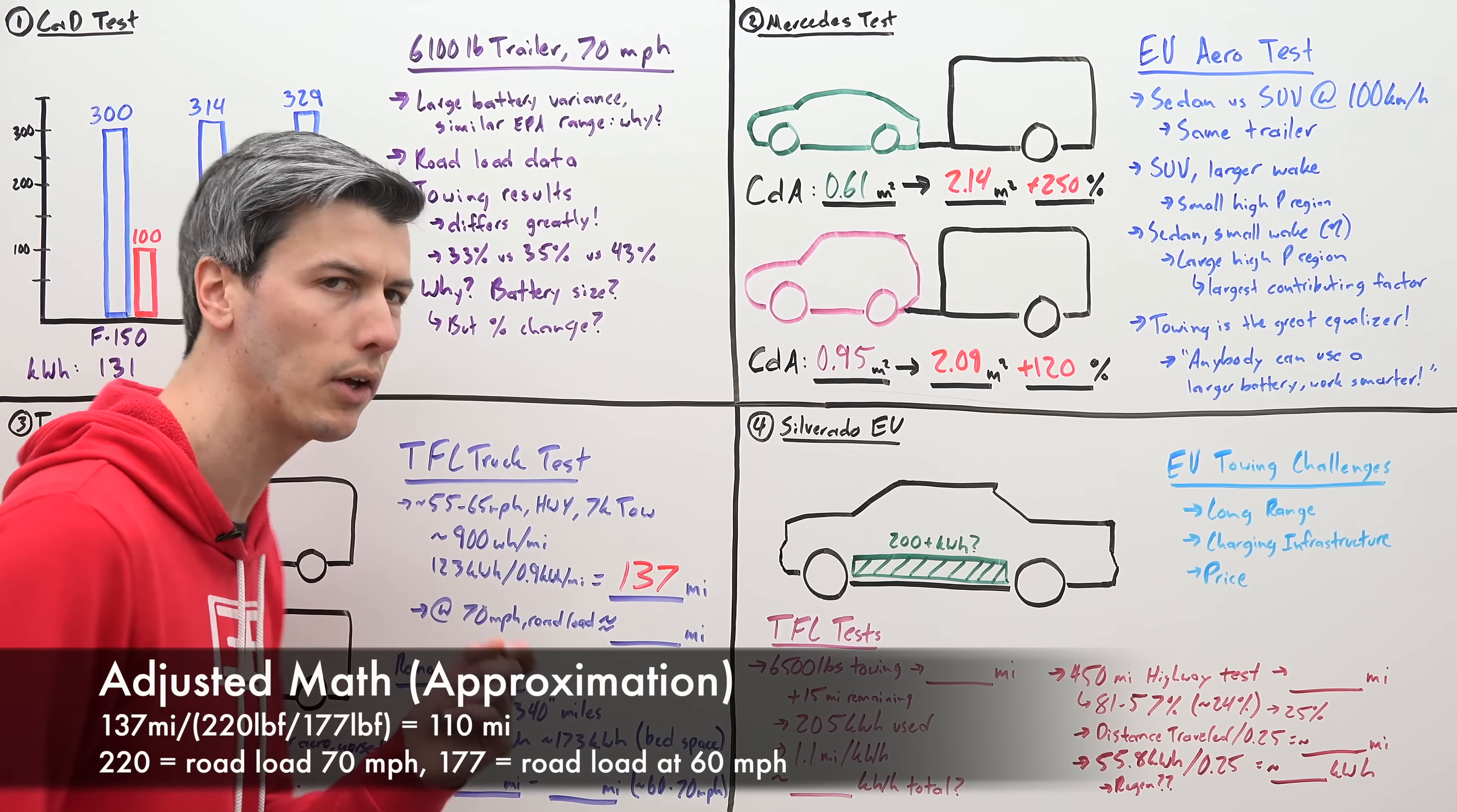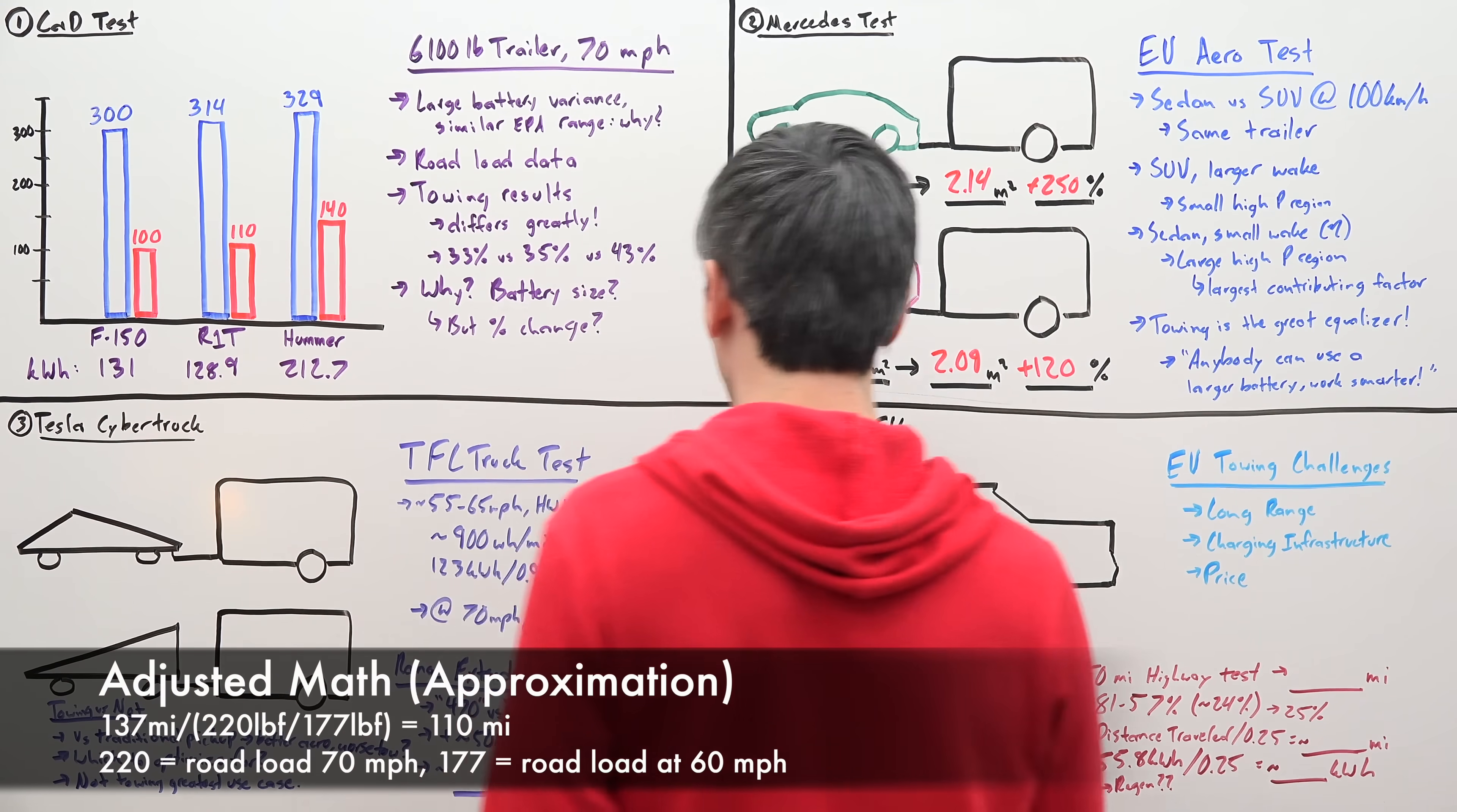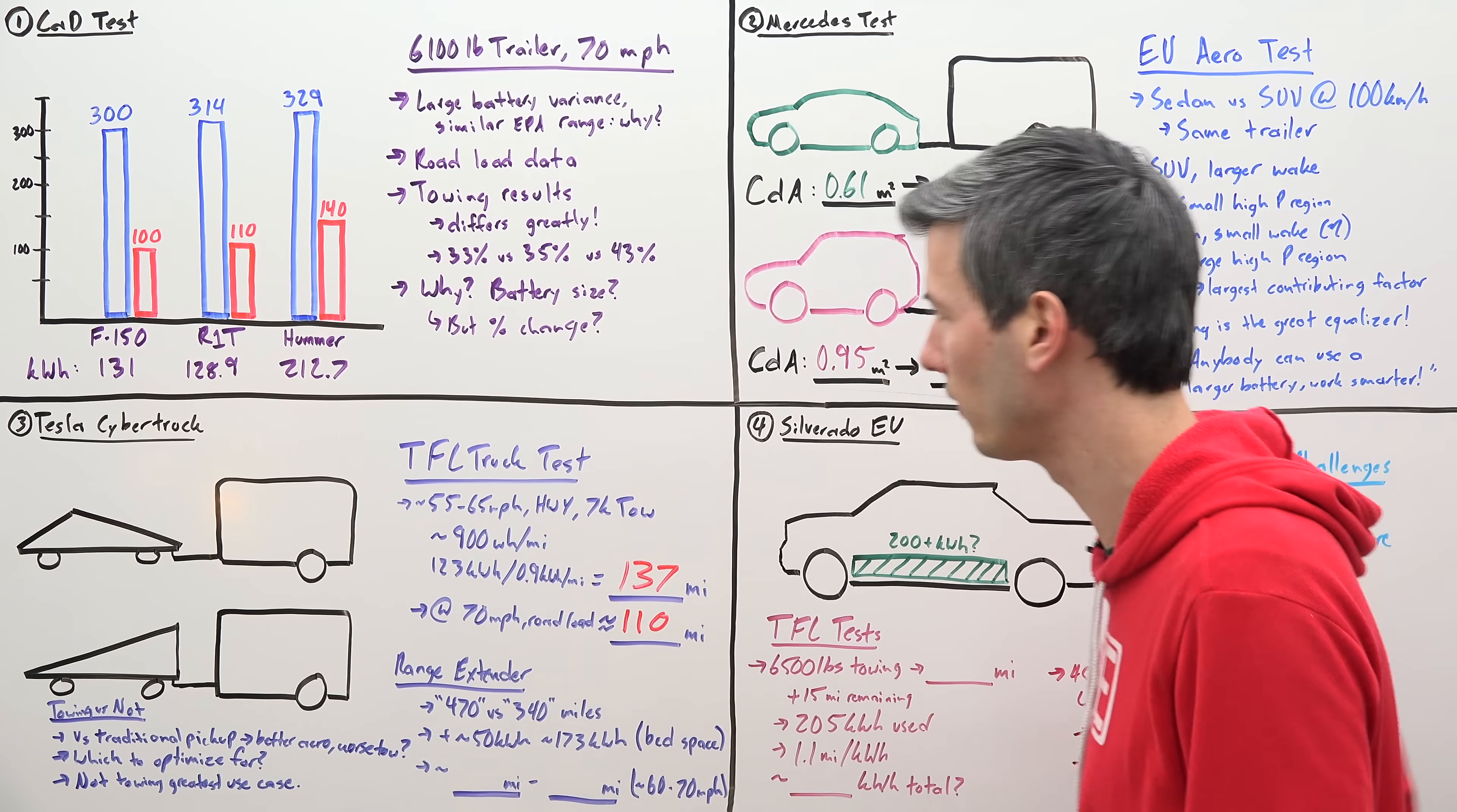Now if you adjust that from 60 miles per hour to about 70 miles per hour using the EPA's road load data and doing a bit of guesstimating there, it gets you in the range of 110 miles at 70 miles per hour. So very similar to both the F-150 Lightning and the Rivian R1T in terms of towing, and that comes down to it has a similar battery size.